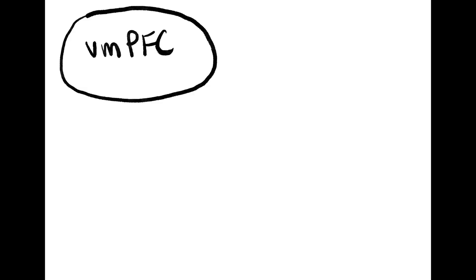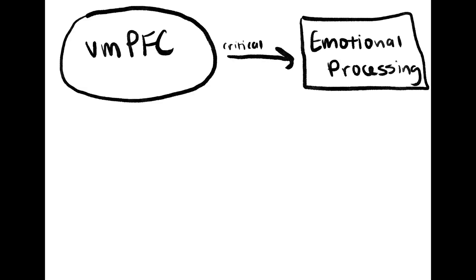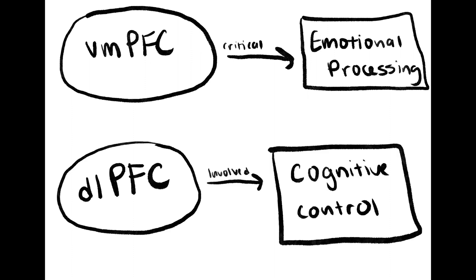While the ventromedial prefrontal cortex is critical to the emotionally processing aspect of the social brain, the dorsolateral prefrontal cortex is more involved in the methodical cognitive control function of the prefrontal cortex.